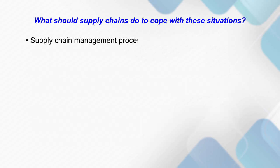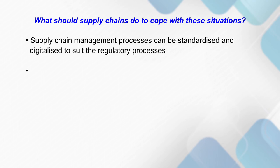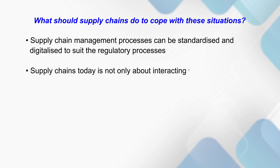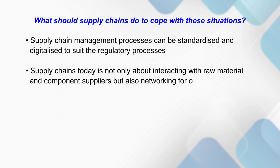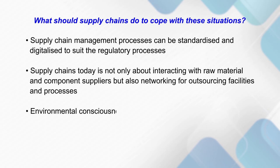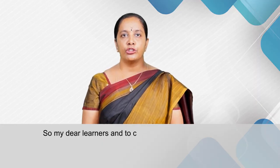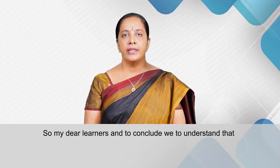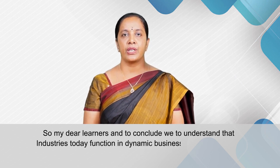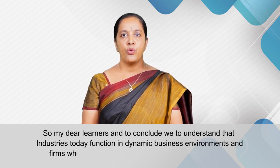Supply chain management processes can be standardized and digitalized to suit regulatory processes. Supply chains today are not only about interacting with raw material and component suppliers, but also networking for outsourcing facilities and processes. Environmental consciousness and social responsibilities should be built in at all points of the supply chain through lean and green supply chain practices.